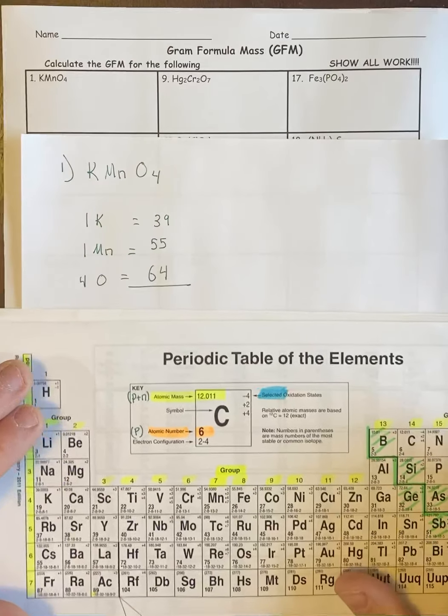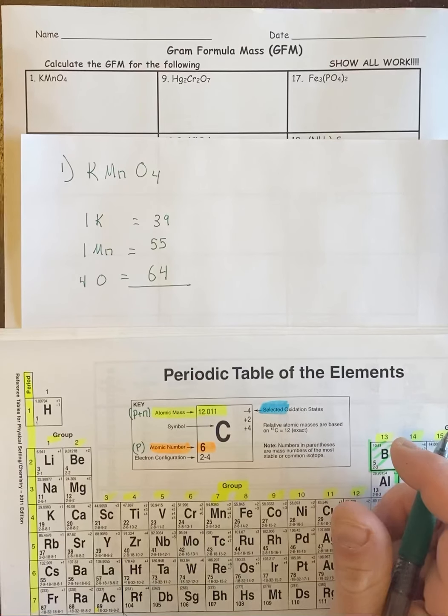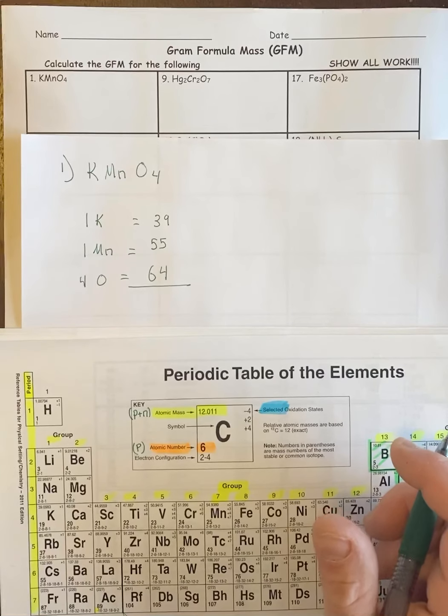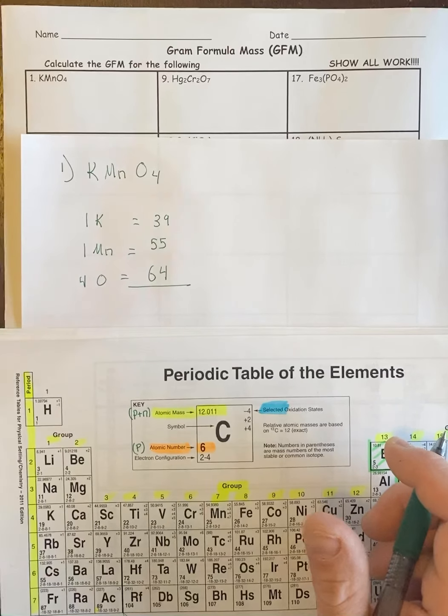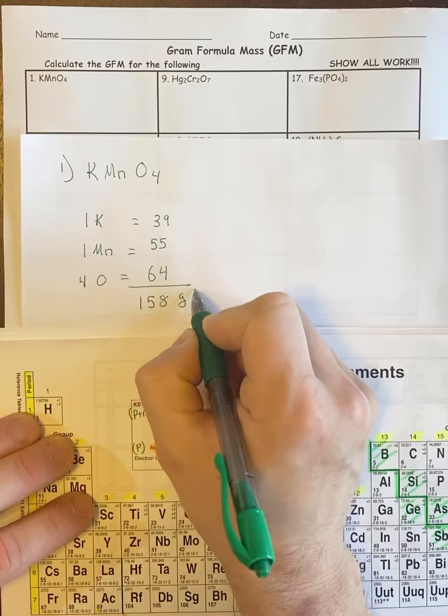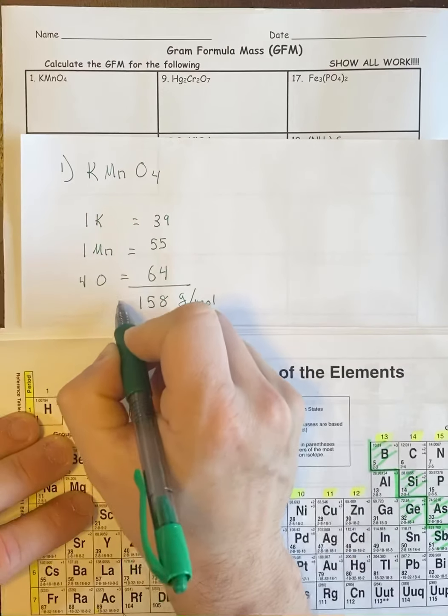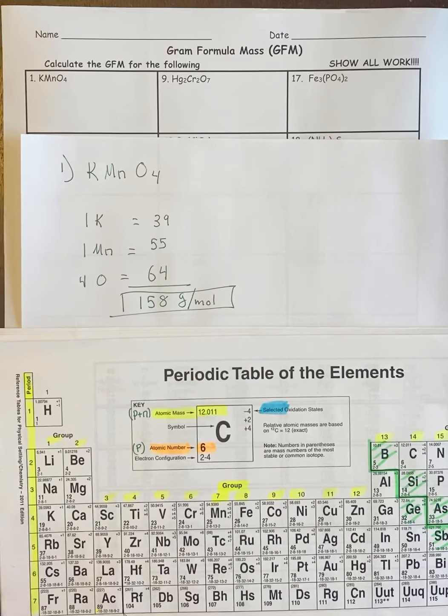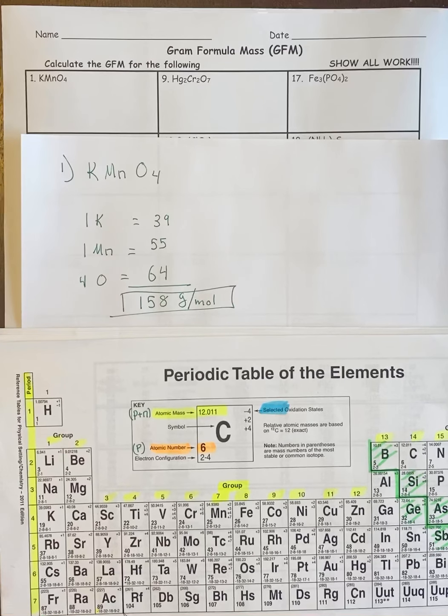Then we add all those together, and we end up with 158 grams per mole—that's the unit for GFM. If you don't know what a mole is, we're going to learn that in our very next lesson. So there's your answer.